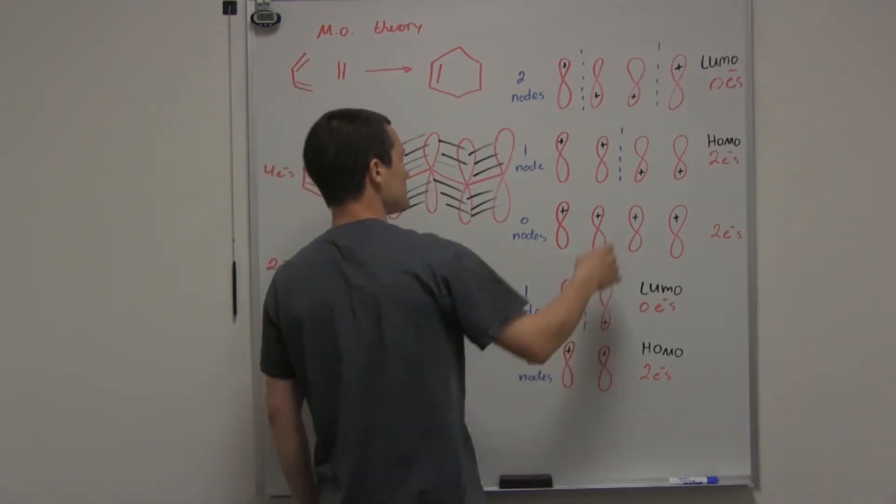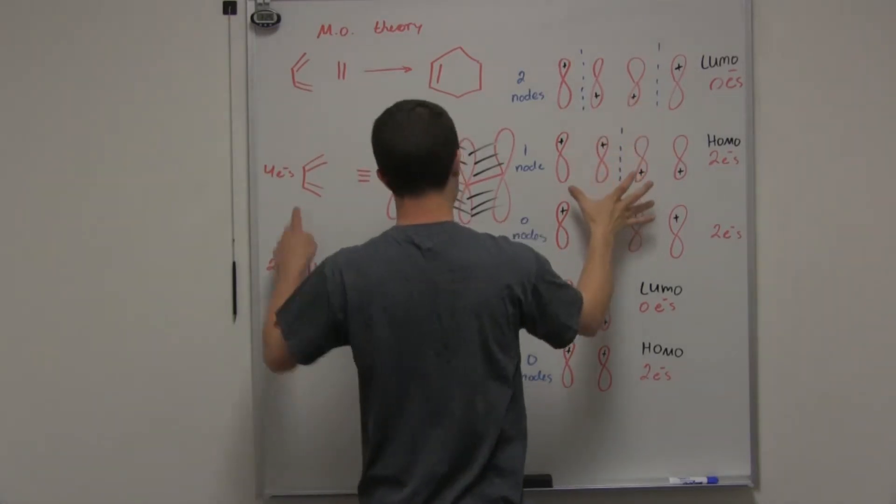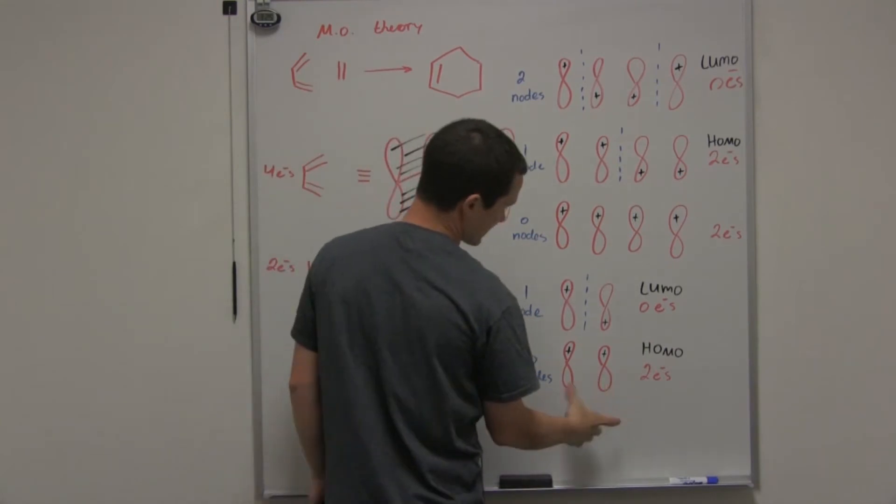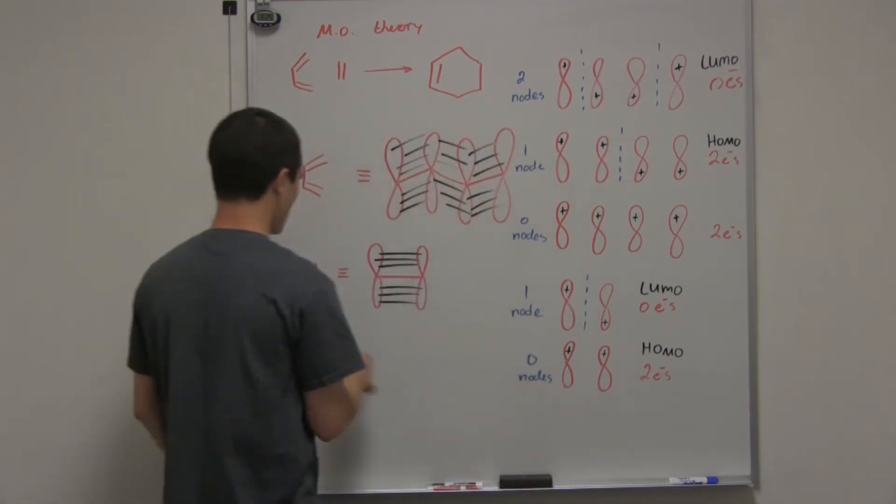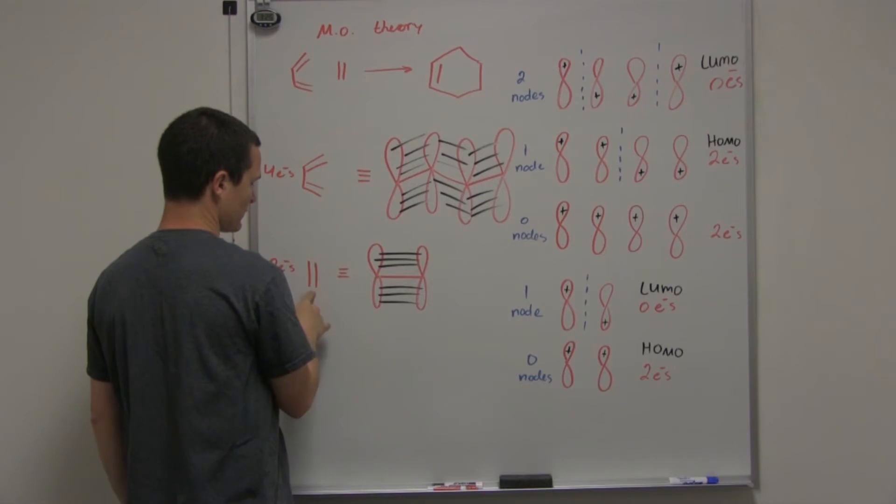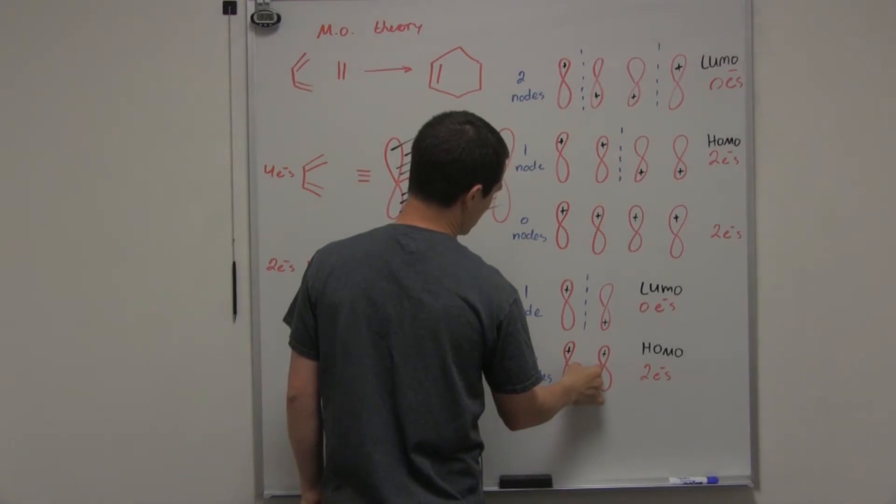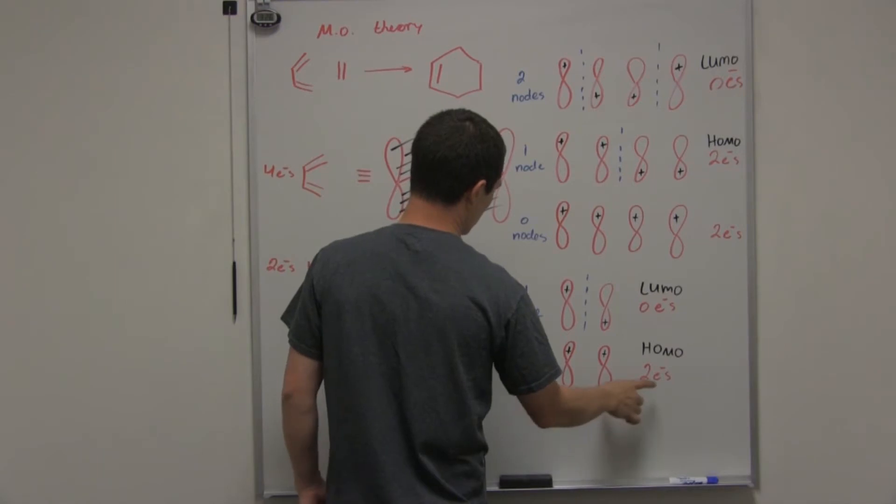If that's for the diene, then looking at the dienophile, we have to do the same thing. We take the total number of carbons, or atoms, involved in the conjugated pi system, which there's only two. So we have two p orbitals involved in forming a molecular orbital. This would actually be the HOMO and the LUMO.